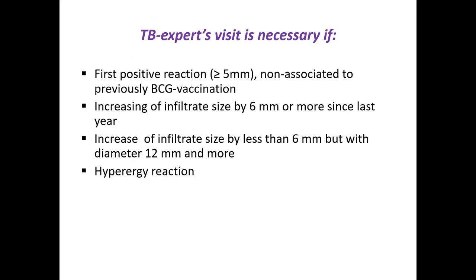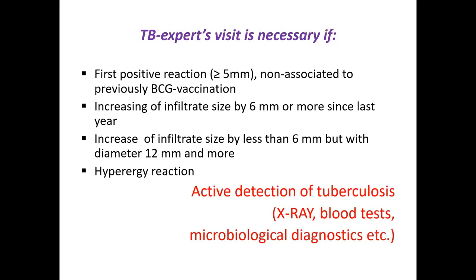Look at the situations during mass screening in children when we need help of a tuberculosis specialist. First, a positive reaction of 5 mm or more not associated with previous BCG vaccination. Increasing of infiltrate size by 6 mm or more since last year. Increasing of infiltrate size by less than 6 mm but with infiltration of 12 mm or more. Hyperergic reaction. In these cases, you should be looking for active tuberculosis by additional methods.